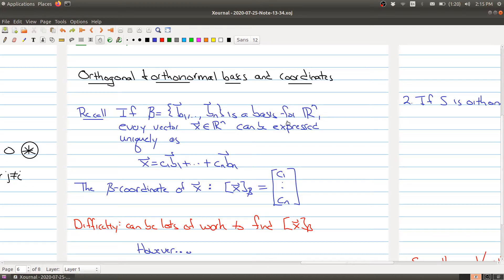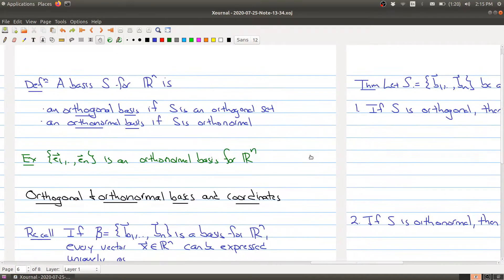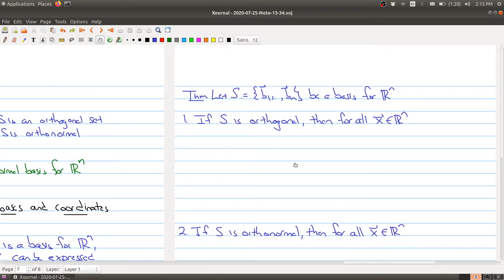However, the payoff for using orthogonal and orthonormal bases comes in the next theorem, which says that you don't need to set up a matrix and solve it. You can actually use dot products and the norm in order to compute things. Let's say you have a basis for R^n, and somebody tells you this is actually an orthogonal basis. Then for every x in R^n, you can write your x in terms of your basis as follows.